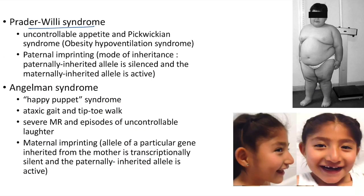Prader-Willi syndrome is characterized by uncontrollable appetite and Pickwickian syndrome, which is obesity hypoventilation syndrome. The mode of inheritance is paternal imprinting — the paternally inherited allele is silenced and the maternally inherited allele is active.